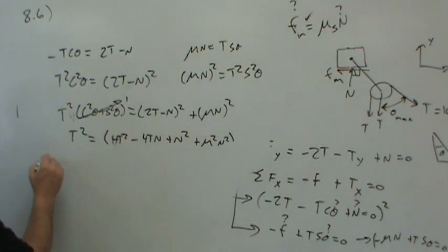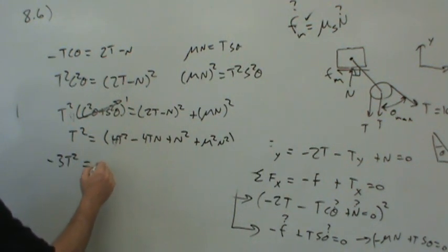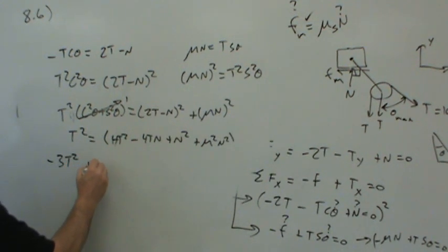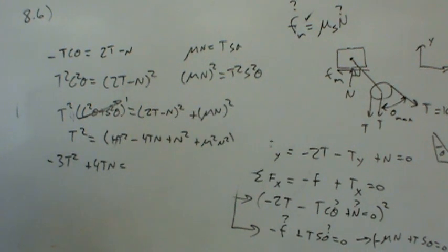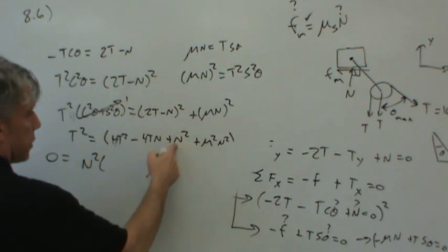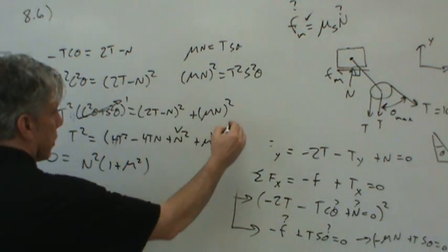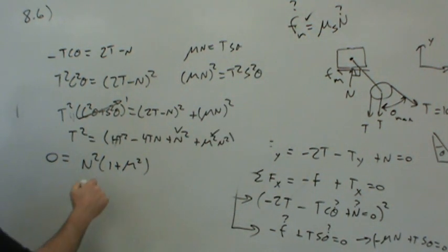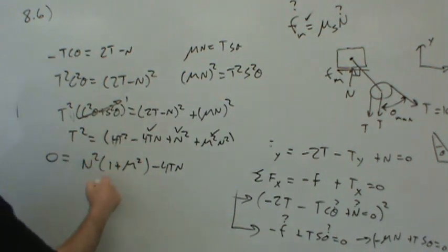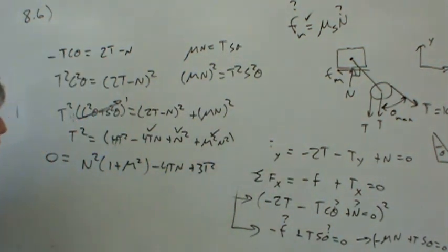It looks like we can combine these two and write negative 3T squared. Let me put it on the other side. Let's just put it all together on one side. 0 equals, we'll pull out N squared terms first. So N squared times, you see how these two can be combined? 1 plus mu squared. So that's those two terms. And then I'll write minus 4TN. That's that term. And if I pull this to the other side, I'd be left with plus 3T squared. Everybody okay with that? So now we have a quadratic equation in N, and we can solve for N.